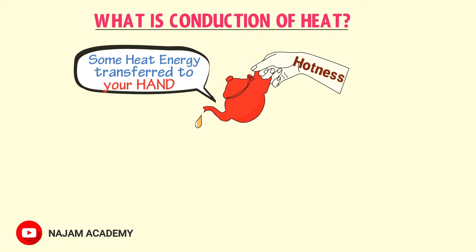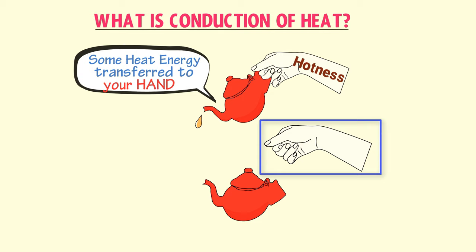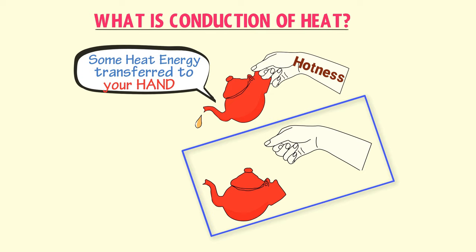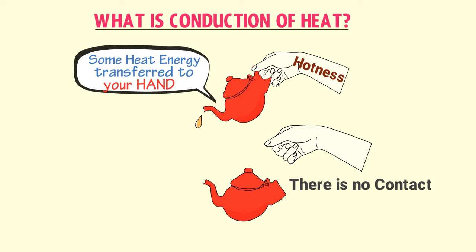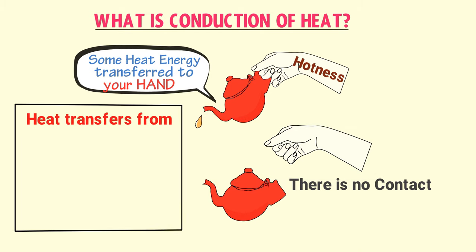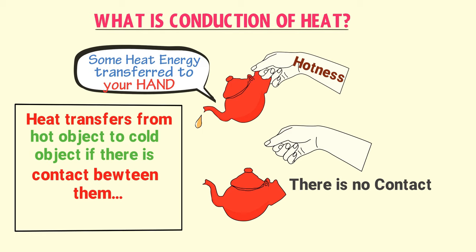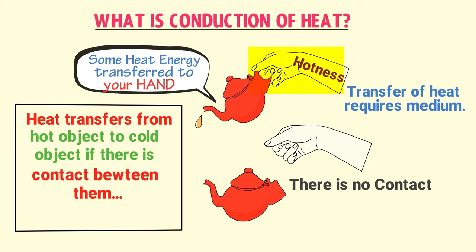Now let's consider another case. If you keep your hand away from the hot object, do you feel its hotness? The answer is no. Because in the first case your hand touched the hot object — there was contact between them — while in the second case your hand is away and there is no contact. From these two cases, we learn that heat only transfers from a hot object to a cold object if there is contact between them. In physics, we say that the flow of heat requires a medium.